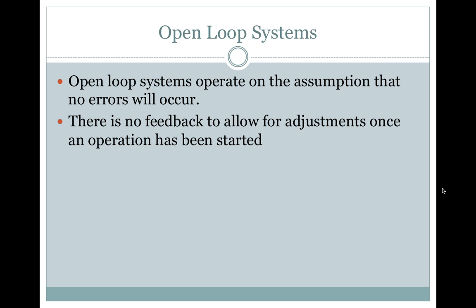Open loop systems. An open loop system operates on the assumption that no errors will occur. There is no feedback to allow for adjustments once an operation has been started.